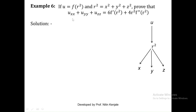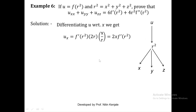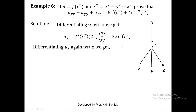Now let us find uxx. To find it we first need ux, the derivative of u with respect to x. By the chain rule, ∂u/∂x equals f dash of r square into derivative of r square, which is 2r, into derivative of r with respect to x, which is x by r. This r cancels with the r from x by r, leaving us with 2x into f dash of r square. So ux equals 2x f dash of r square.